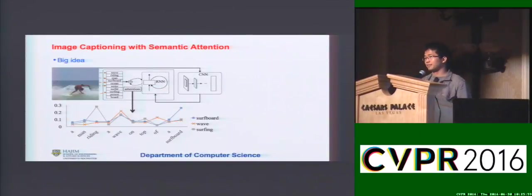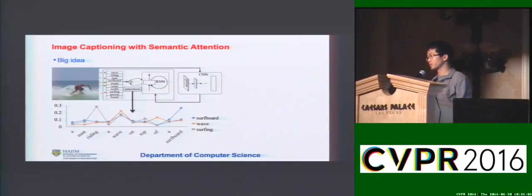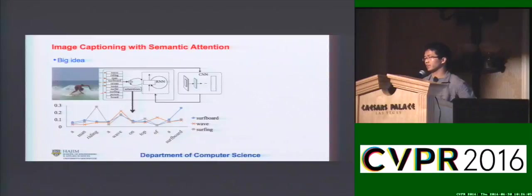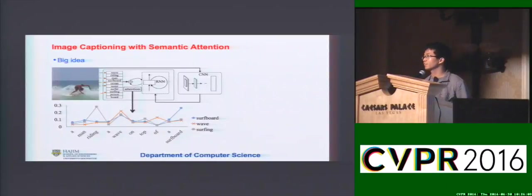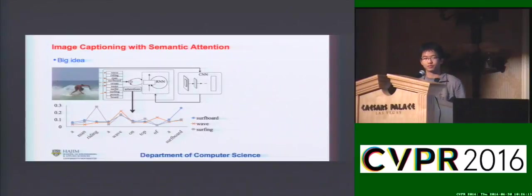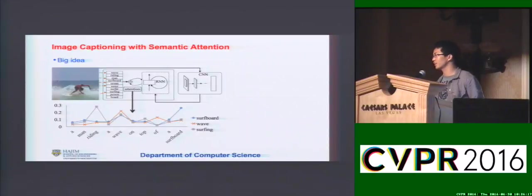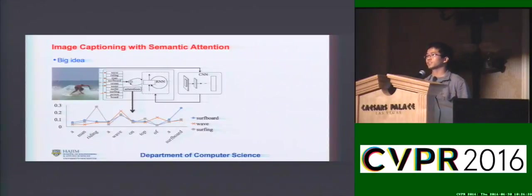Currently, for our image captioning system, we think there are two approaches. The first one is a bottom-up approach: given an image, you generate a bunch of words, then you try to compose a sentence or caption from those candidate words. The second approach is to start from the whole image and generate the whole sentence directly.